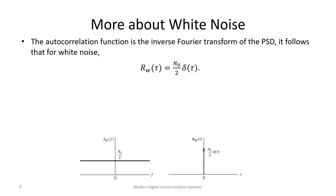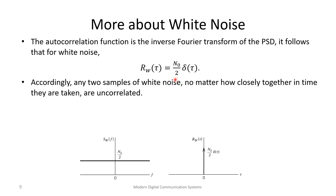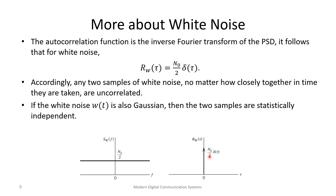Beyond the PSD, we can represent white noise in the time domain using its autocorrelation function, which is the inverse Fourier transform of a constant — giving a delta function scaled by N₀/2. This means all samples of white noise are uncorrelated: any two samples, no matter how close together, have zero correlation for any non-zero shift. Comparing the signal with itself gives the noise power N₀/2.